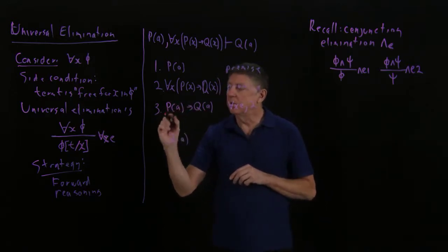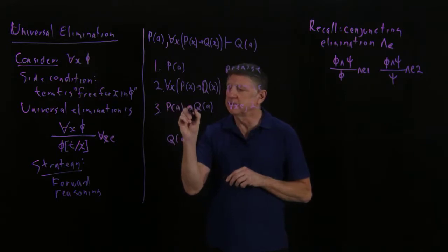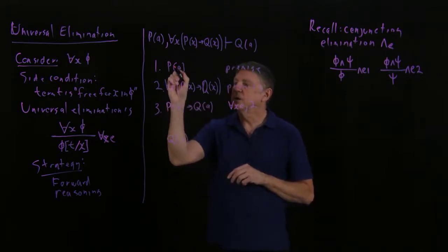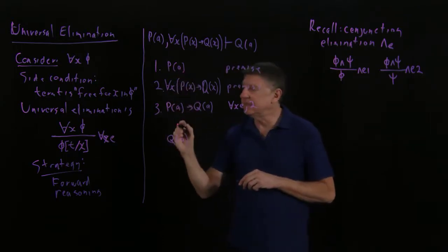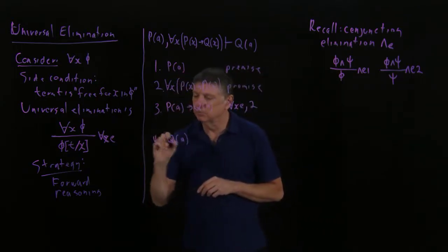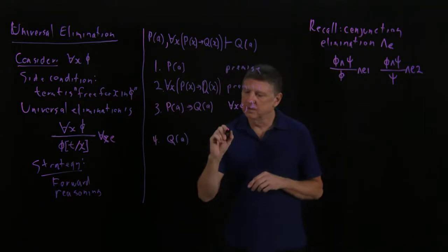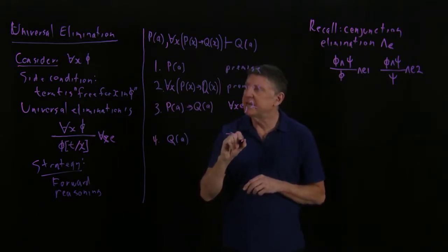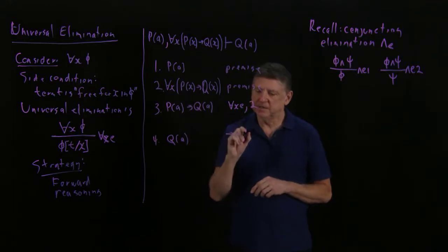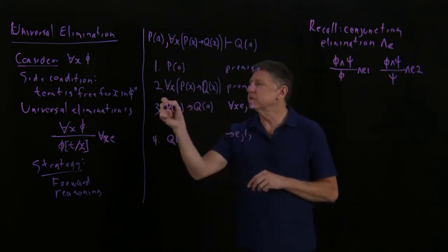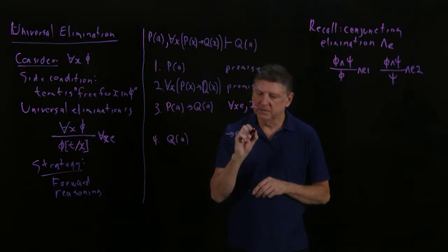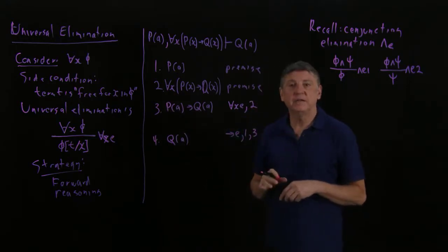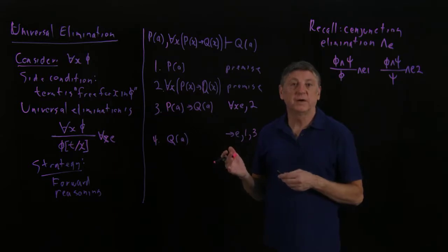And now, I have p of a material implies q of a, and I have p of a, which I have as an antecedent. So now, I can use a rule from propositional logic, which is, I can use material elimination, and our convention is that the antecedent comes first, and then the material implication comes second, and I've completed our first proof in predicate logic.